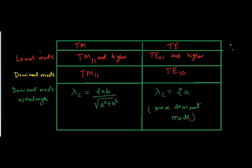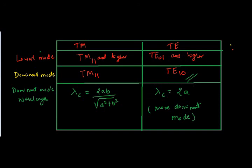If anywhere you encounter a question which says dominant mode in a waveguide, and if the question does not explicitly mention whether it is talking about TM waves or TE waves, you can safely assume that they are referring to TE10. Because this is the most dominant mode in a waveguide when comparing transverse magnetic and transverse electric waves. For m equal to 1 and n equal to 0, the cutoff wavelength will be much higher, and no other modes can produce this wavelength inside the waveguide other than TE10. So the dominant mode in general for a waveguide is TE10. If they are talking about TM waves particularly, then it will be TM11.